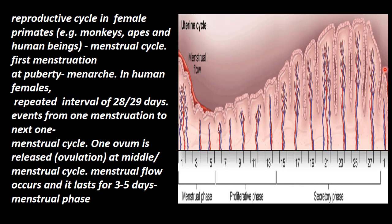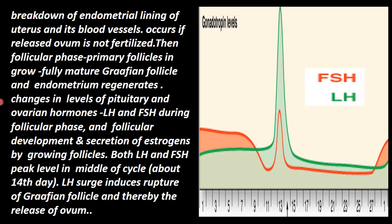Otherwise, if fertilization does not occur after the luteal phase, the menstrual flow starts again. This breakdown of the endometrial lining of the uterus and its blood vessels is the menstrual flow, which occurs if the released ovum is not fertilized. If there is fertilization, there will be no repetition of the menstrual flow. Stoppage of menstrual flow may indicate pregnancy, or it may be due to other reasons such as stress, low nutritional level, or disease.